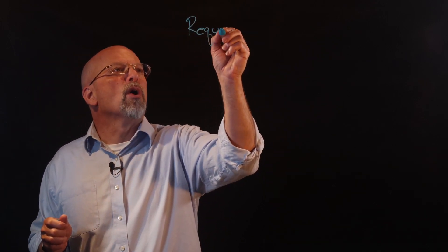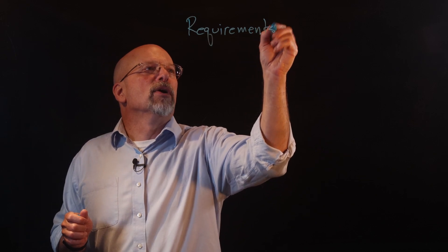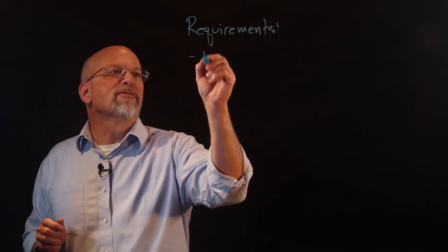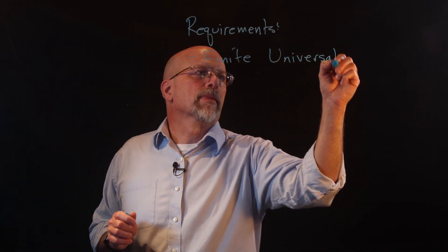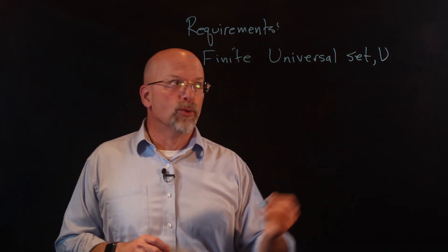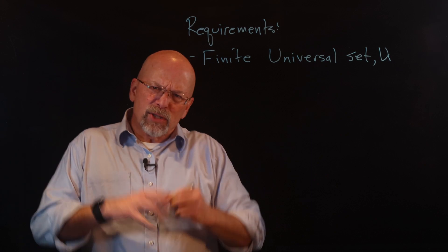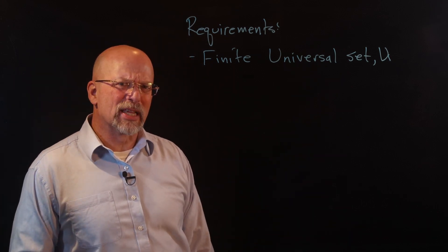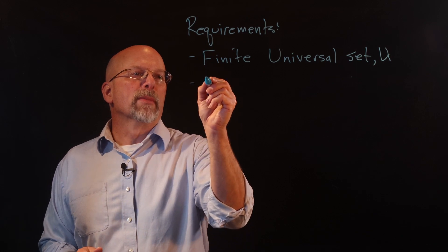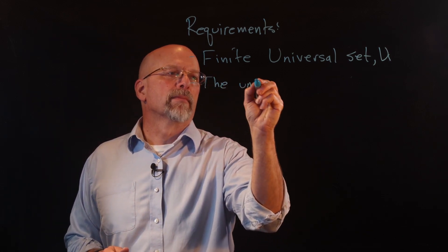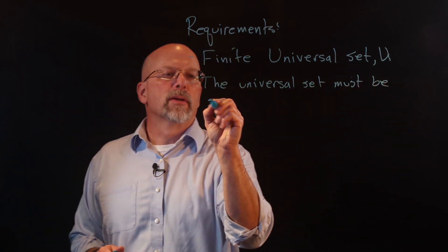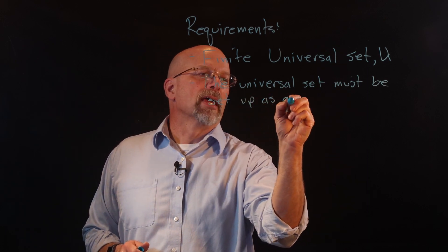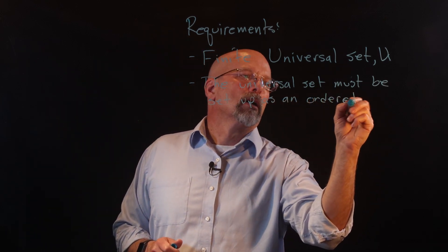First of all, let's say that we do want to represent a set. Some requirements for doing this on the machine include: first of all, you must have a finite universal set. It has to be finite, which makes sense because computers are really bad at representing infinity. Second, when we're implementing this, the universal set must be set up as an ordered collection.